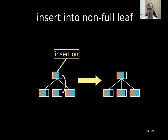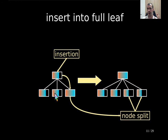If we assume that we insert into a non-full leaf, then we just add this key to the leaf and we're done. If the leaf is full, then we do the split in the standard B-tree: the node gets split and we have two new leaves each with half the occupancy.